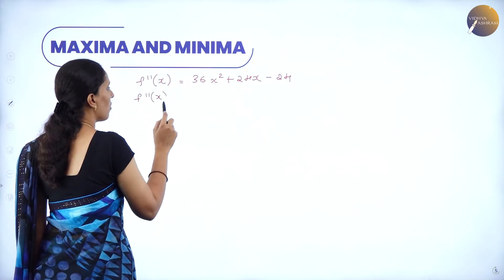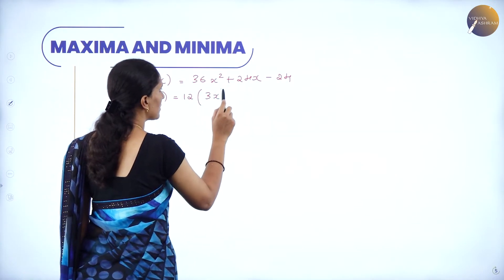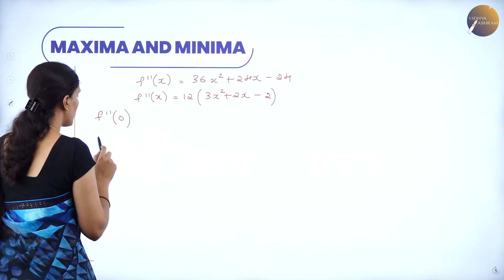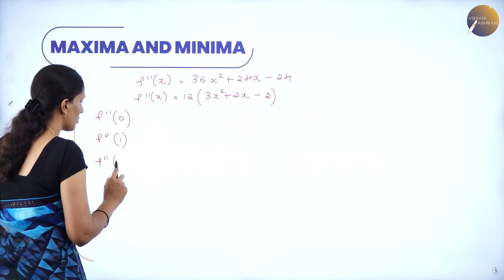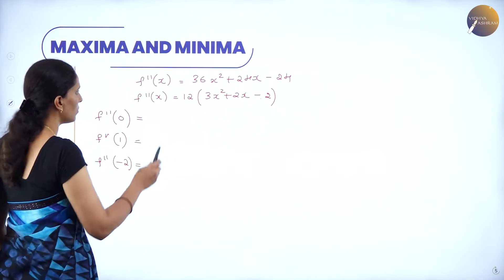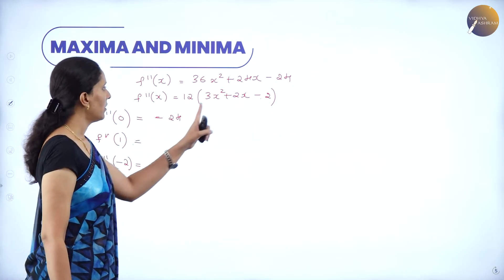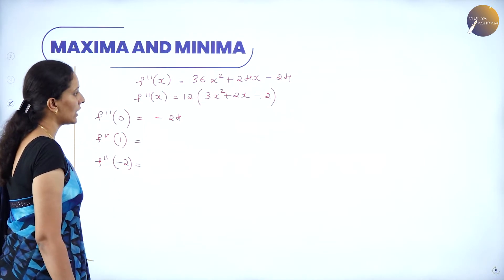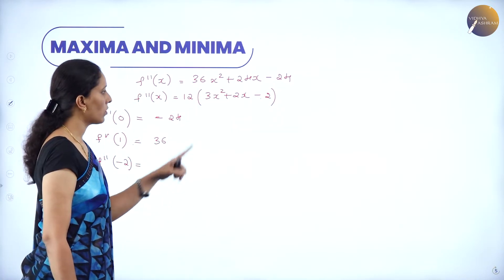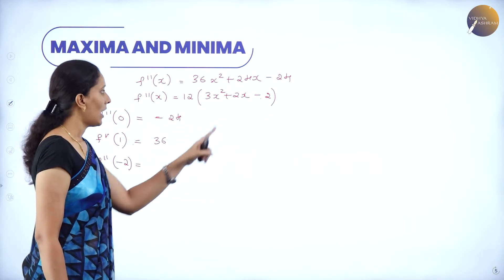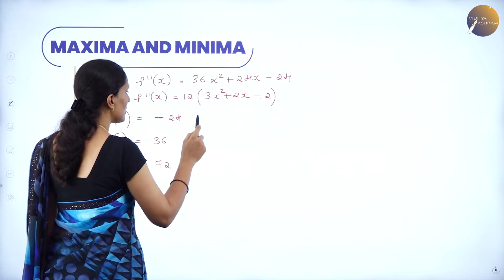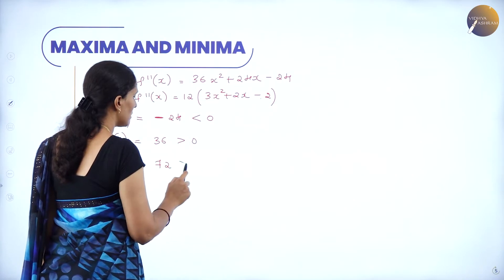We can factor out 12: f''(x) = 12(3x² + 2x - 2). Now substitute all critical points. f''(0): putting x = 0 gives 0 + 0 - 24 = -24, so f''(0) = -24. f''(1): 3 + 2 - 2 = 3, so 12 × 3 = 36, meaning f''(1) = 36. f''(-2): (-2)² = 4, so 3×4 = 12; 12 + 2×(-2) - 2 = 12 - 4 - 2 = 6, so 12 × 6 = 72, meaning f''(-2) = 72. Clearly f''(0) < 0, f''(1) > 0, and f''(-2) > 0.